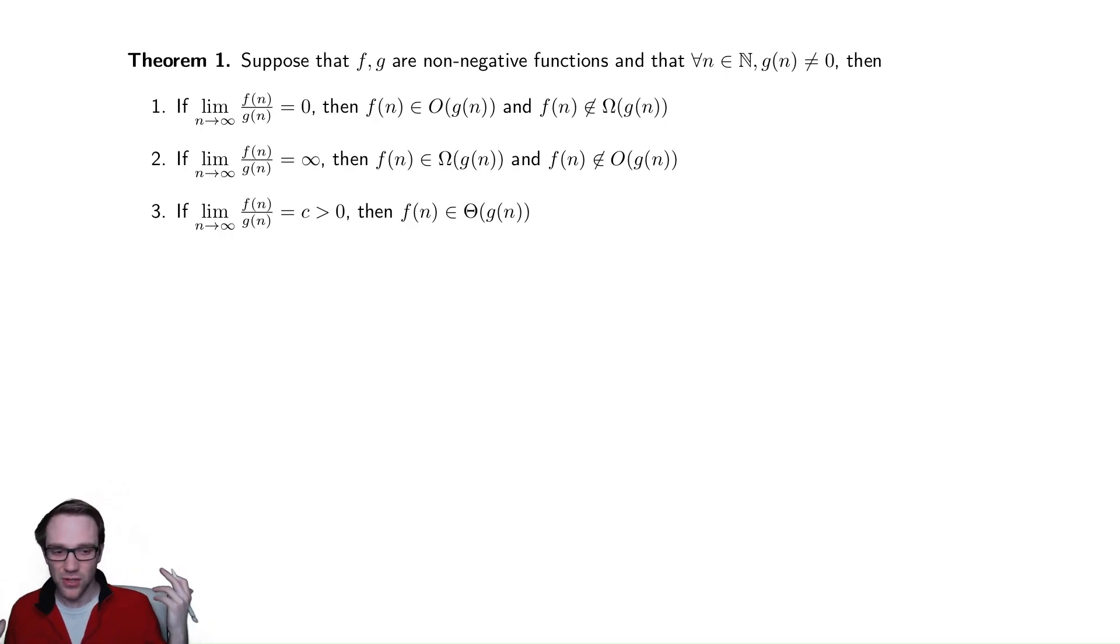In practice, those constants and that n0 are wholly irrelevant. All we really care is what thing grows faster or slower. Limits are great at capturing that.